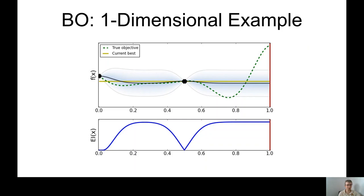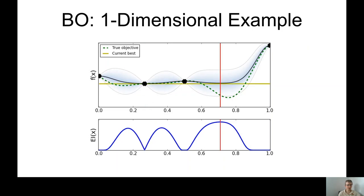That doesn't look like a minimum, so acquisition function picks another point of big uncertainty. And this time on the right of the plot. Notice that every time we evaluate the function, we update both the surrogate model and the acquisition function with this new information. So for these few iterations, we just evaluate the function in the biggest areas of uncertainty. We're basically just exploring.